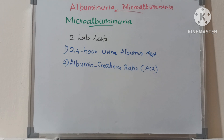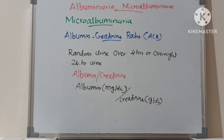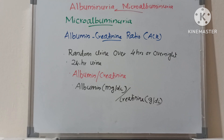The second test is the albumin-creatinine ratio (ACR), a method to detect elevated urinary protein that measures how well the kidneys are working. ACR compares the amount of albumin in the urine with the amount of creatinine. If albumin is detected in a random sample collected over 4 hours or overnight, it may be confirmed with a 24-hour urine collection. The ACR is calculated by dividing urine albumin concentration in mg by urine creatinine concentration in g.